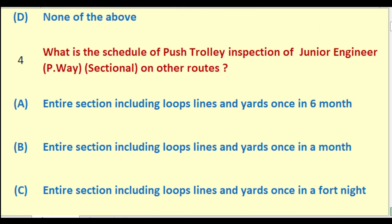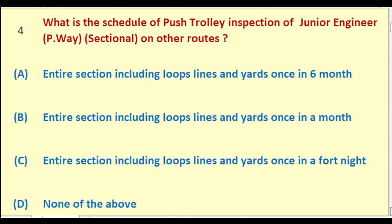What is the schedule of foot inspection of Junior Engineer Permanent Way Sectional on other routes? Options: entire section including loops, lines and yards once in a month; entire section including loops, lines and yards once in a fortnight; none of the above.